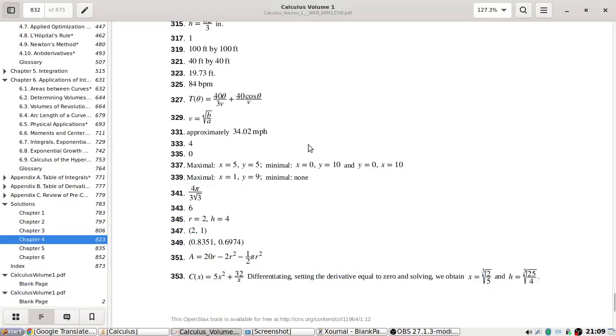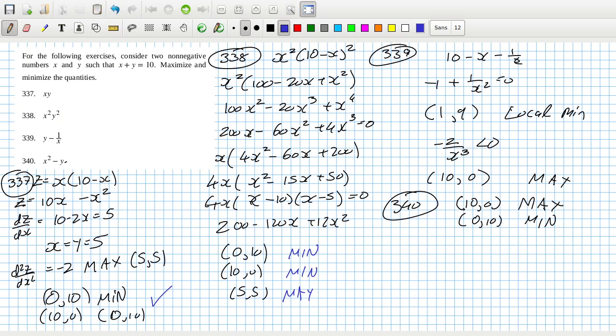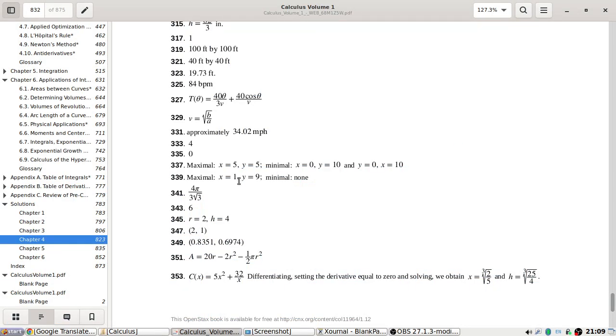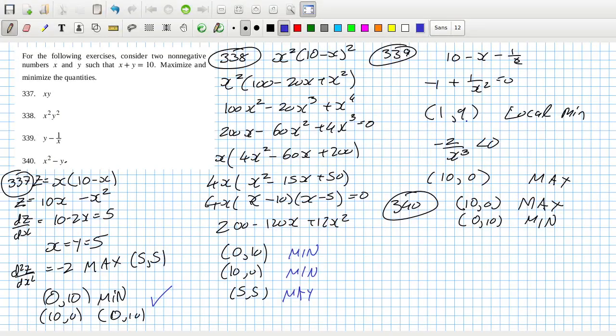Let's check the answers if we can. Okay. 337: 5, 5, 0, 10. 10, 0. Okay. So that's fine. And then 339: 1, 9. Minimal: None.